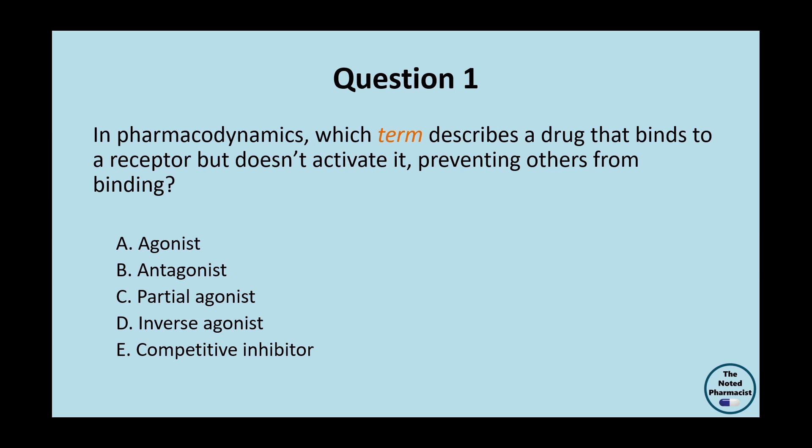Option A: Agonist. Option B: Antagonist. Option C: Partial agonist. Option D: Inverse agonist. Option E: Competitive inhibitor.